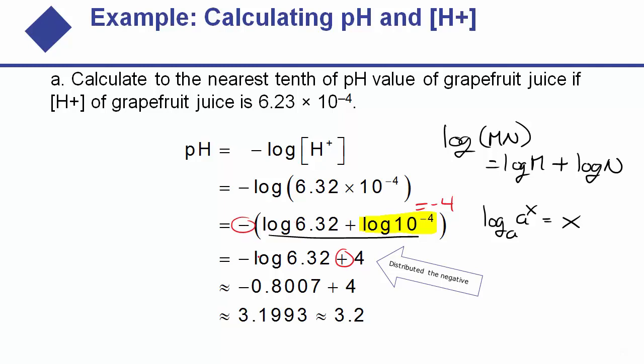You still have the negative on the log of 6.32 piece. Plug into your calculator: take the negative log of 6.32 and add 4, and you get essentially a pH level of 3.2. So grapefruit has a pH level of 3.2 — and that is why it stings so badly when it squirts in your eyes.